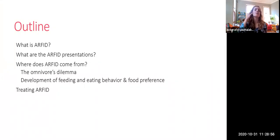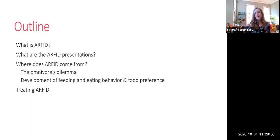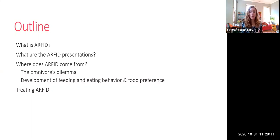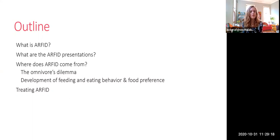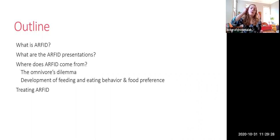In this presentation we're going to talk about avoidant restrictive food intake disorder — what it is broadly, what distinct presentations of symptoms make up the diagnosis, and within each of the three ARFID presentations we'll talk about mechanisms: what causes and maintains ARFID symptoms. The focus will be on the concept of the omnivore's dilemma, and the development and reinforcement of feeding behavior and food preference. We won't cover treatment in this class.